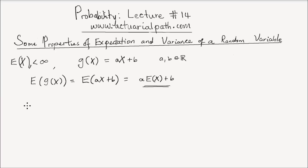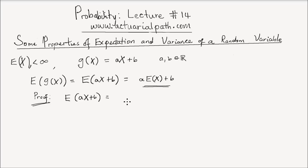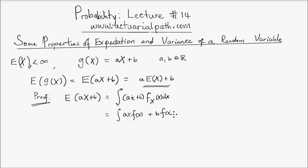Let me outline a quick proof. We want to find the expectation of a times x plus b. For simplicity, assume x is a continuous random variable — though this formula holds for discrete or continuous random variables. The expectation is the integral of (ax + b) times the PDF f(x) dx, which equals the integral of a·x·f(x) + b·f(x) dx.